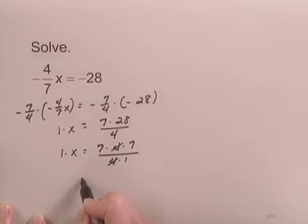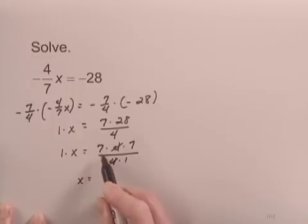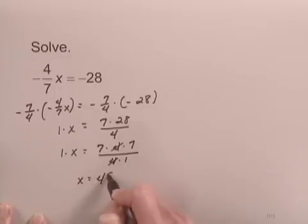What I have on the left-hand side is x, and on the right-hand side I have 7 times 7 over 1, 49 over 1, which is 49.